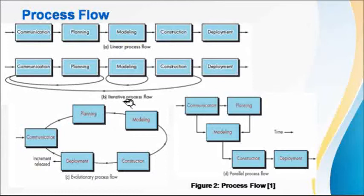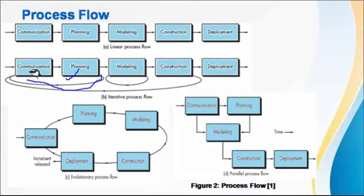The next is iterative process flow. After communication, if we plan some activity and find a problem, there is a way to go back to a previous activity. We can have any number of iterations when performing some activity. As you can see, after construction we can also go back to communication. In iterative process flow, it is possible to go back to previous stages.